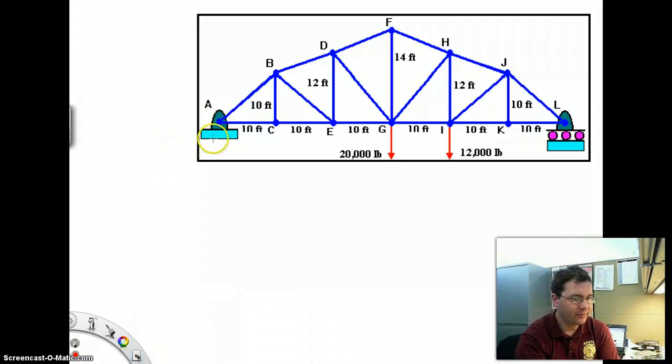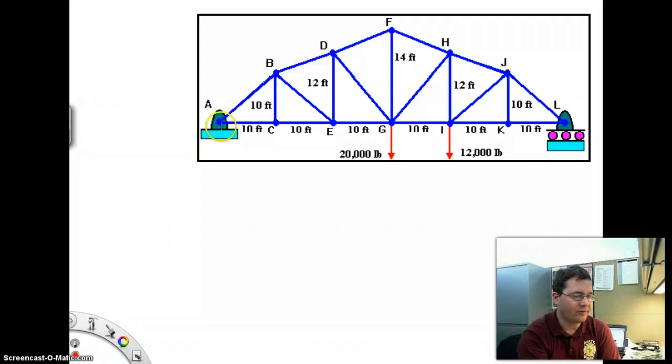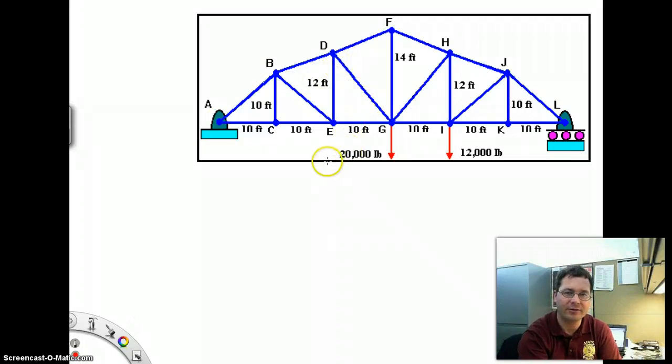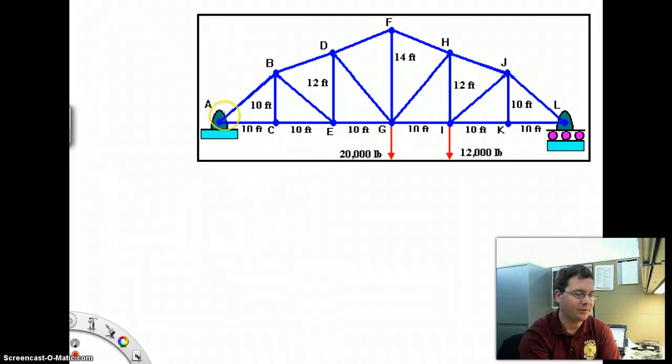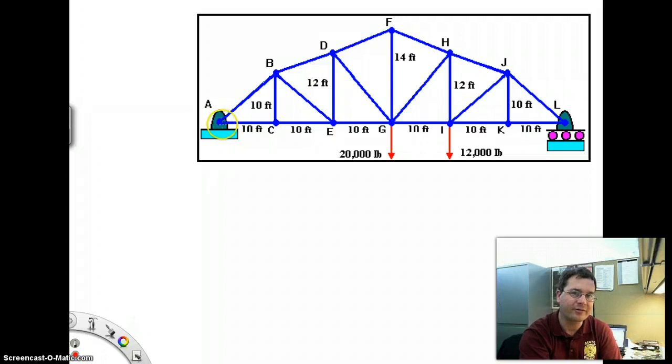In this problem, you're asked to find a number of characteristics of this truss-type structure. Remember what makes this a truss is the fact that all of these members are loaded purely in axial tension or purely in axial compression. There is no bending in any of these members.